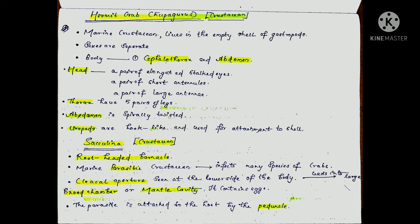Their body is divided in two parts: one is the cephalothorax, and two is the abdomen. The cephalothorax is the head part, which has a pair of elongated stalked eyes, a pair of short antennules, and a pair of large antennae.